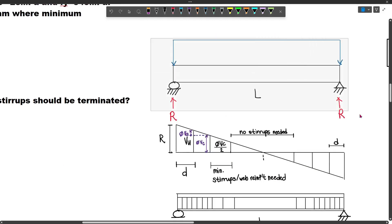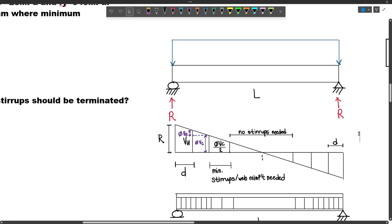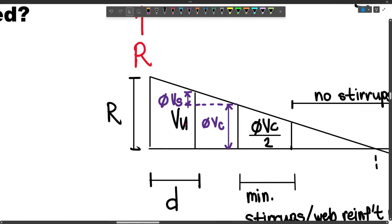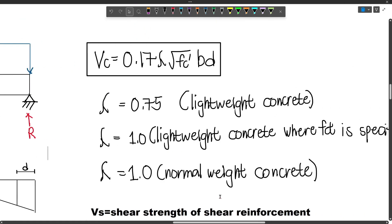Let's say we have a beam loaded with a uniformly distributed load. This is its shear diagram because the reactions are equal, so the maximum shear is at the support. However, let's review VU and its components: VU, VS, VC, and phi.